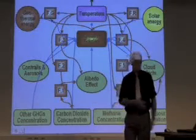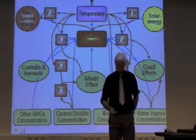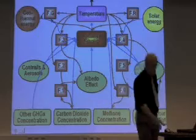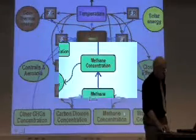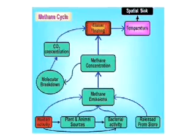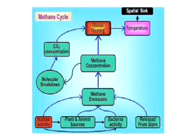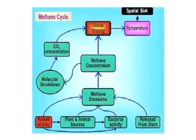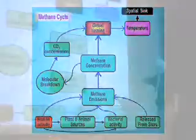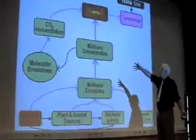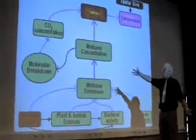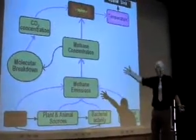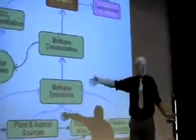We could look at some of those in detail — behind this presentation is a three-day seminar, so I'll be briefer this morning. Let's look at the methane cycle. Methane emerges from human activity, from plants and animals, bacteria, and methane released from straw. This increases methane concentration in the atmosphere, where methane slowly breaks down into carbon dioxide and water vapour.